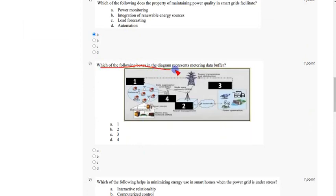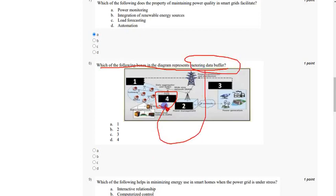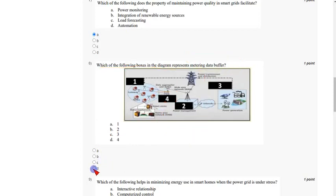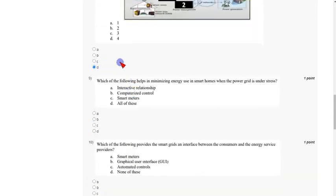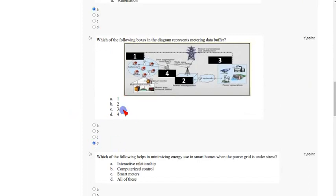Coming to the eighth question: which of the following boxes in the diagram represents the metering data buffer? In this diagram, the fourth box is where metering data buffer should be represented. So the answer is option D, the fourth box. Mark option D as the correct answer for the eighth question.